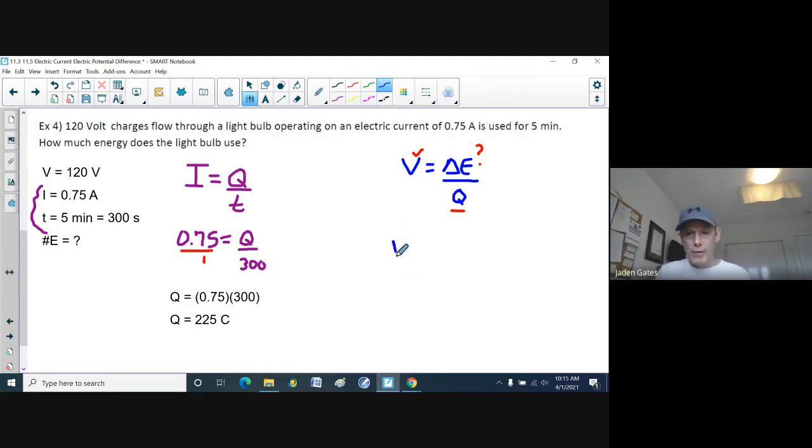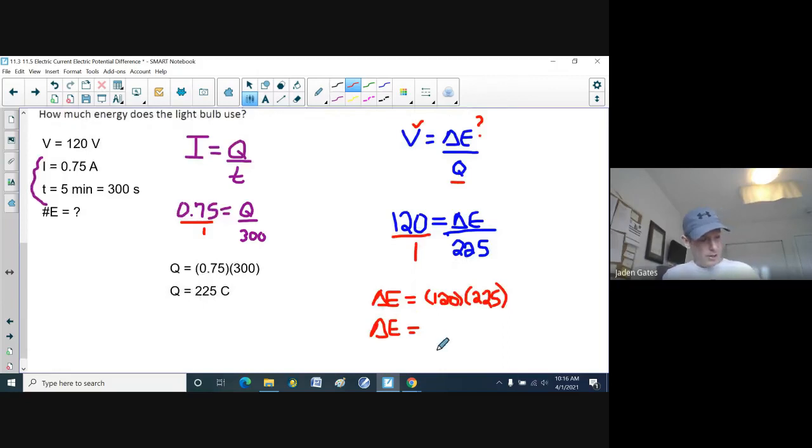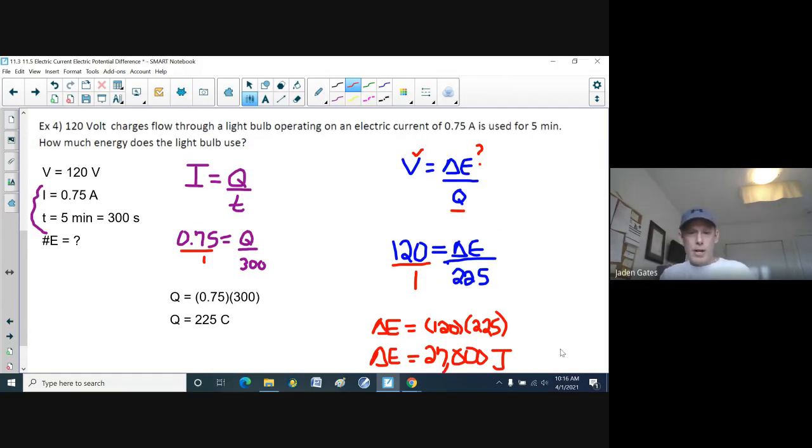So now I can go back up and find out how much energy I have because I now have my Q value. So I look over, 120 volts. Delta E, that's what we're trying to find out. My charge is 225. Lo and behold, number equaling a fraction. So I know where I'm going with this. And so when I solve this, I have 1 times delta E is delta E. And then I have 120 times 225. Now I multiply those two numbers. And this time I end up with 27,000 joules of energy. And there we go.